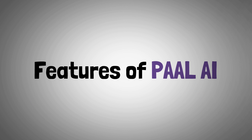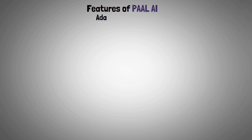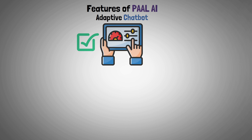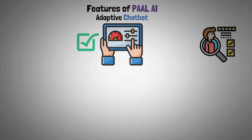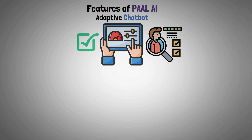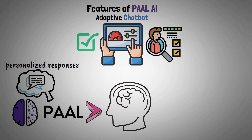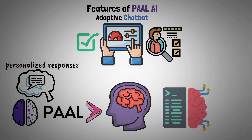Now let's present the features of Paul AI. Adaptive Chatbot: With the ability to adjust to each user's specific needs and preferences, Paul AI is able to provide personalized responses. It has extensive knowledge across multiple domains due to its training on a diverse range of datasets.